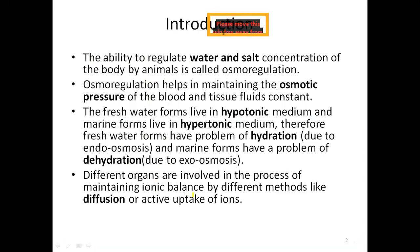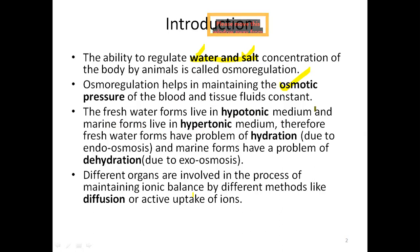Osmoregulation is maintenance of body fluid concentration — ultimately it is the water and salt concentration of the body that has to be maintained and cannot keep fluctuating. The main importance of osmoregulation is that it helps in maintaining the osmotic pressure of the blood and tissue fluid concentration. That is why there are different mechanisms developed by freshwater animals, marine animals, and terrestrial animals to maintain body fluid concentration.